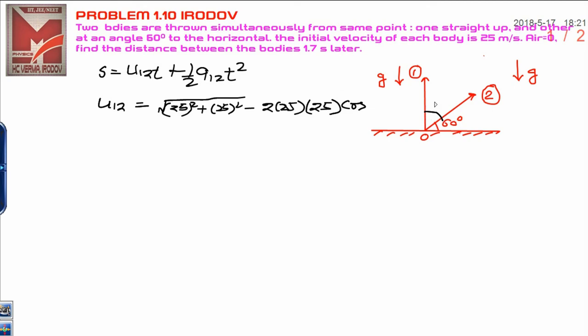You can put 30 degrees here, cos 30°. This is how you get the relative motion by parallelogram law. I can write approximately 25√(2(1 - cos 30°)).